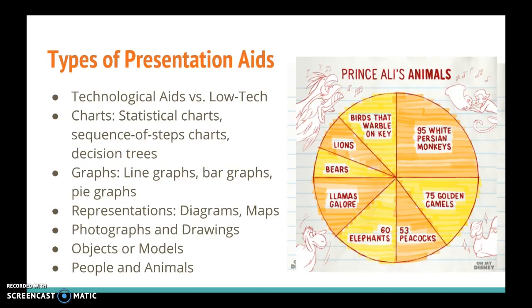I also have a pie chart here about the animals in Prince Ali's menagerie from Aladdin. You can see that a quarter of his animals are the 95 white Persian monkeys, he's got 75 golden camels, 53 peacocks, birds that wobble on key, and all of these other animals — make way for Prince Ali! Pie charts, graphs, and all of these different things can be really helpful in helping your audience understand what you're talking about in your speech.